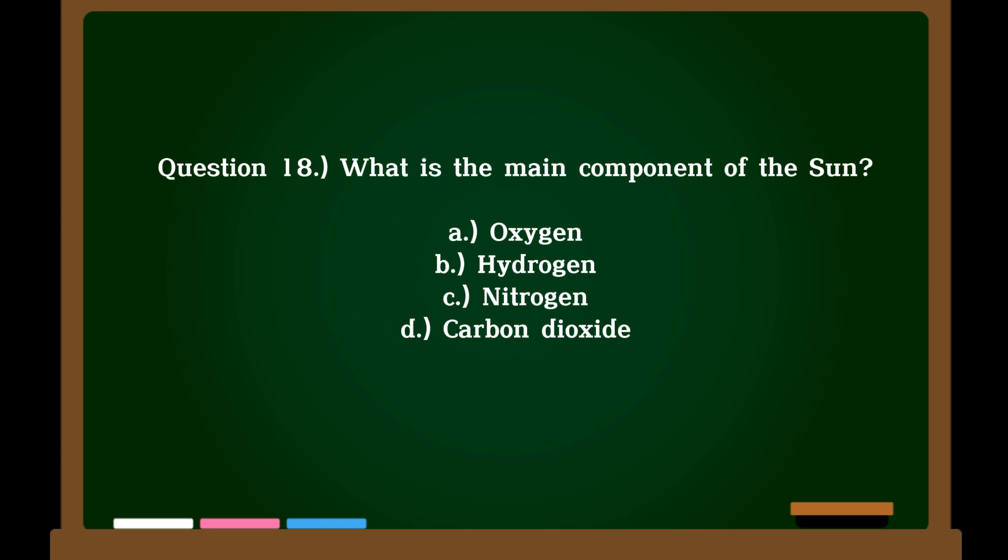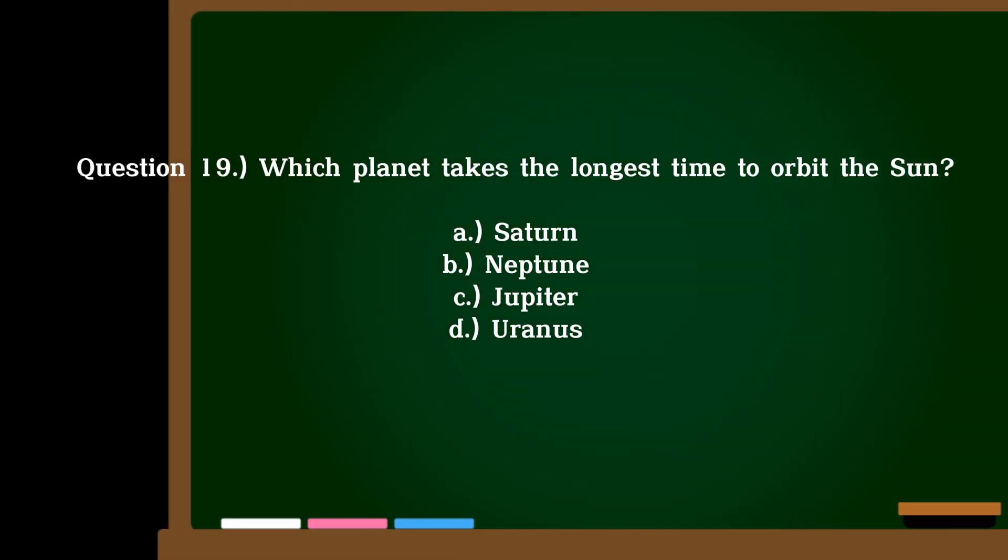Question 18. What is the main component of the sun? A. Oxygen, B. Hydrogen, C. Nitrogen, D. Carbon dioxide. Correct answer: B. Hydrogen.